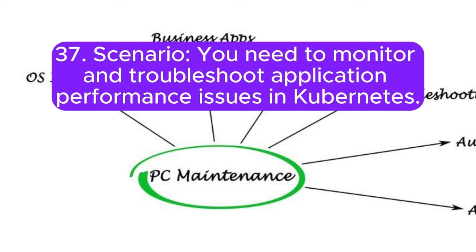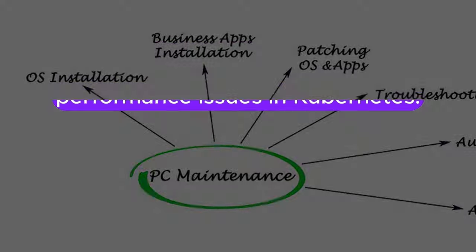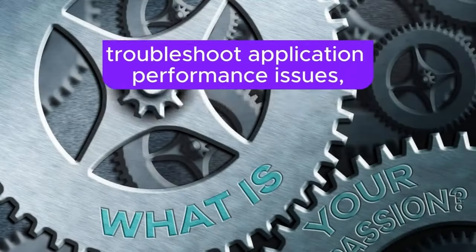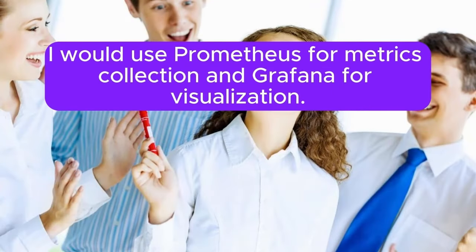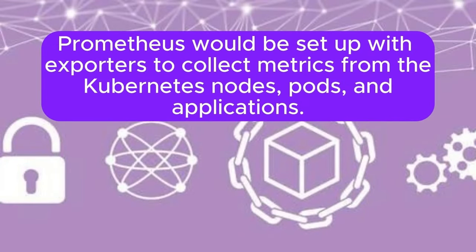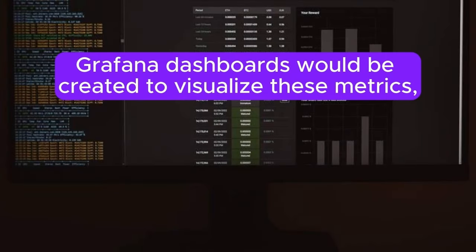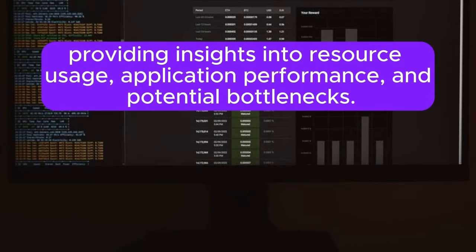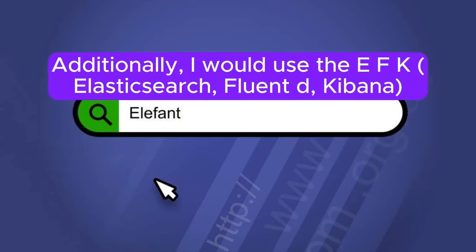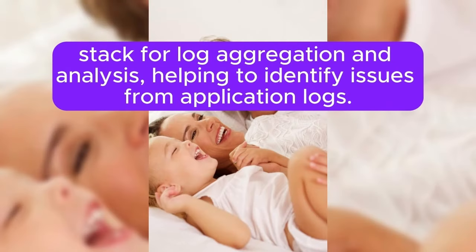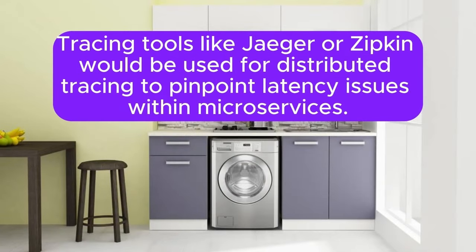Scenario 37: You need to monitor and troubleshoot application performance issues in Kubernetes. Which tools would you use and how would you set them up? Answer: To monitor and troubleshoot application performance issues, I would use Prometheus for metrics collection and Grafana for visualization. Prometheus would be set up with exporters to collect metrics from Kubernetes nodes, pods, and applications. Grafana dashboards would be created to visualize these metrics, providing insights into resource usage, application performance, and potential bottlenecks. Additionally, I would use the EFK stack (Elasticsearch, Fluentd, Kibana) for log aggregation and analysis. Tracing tools like Jaeger or Zipkin would be used for distributed tracing to pinpoint latency issues within microservices.